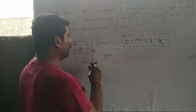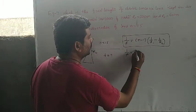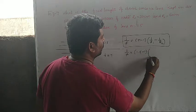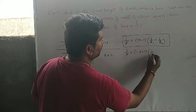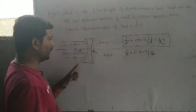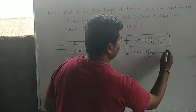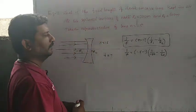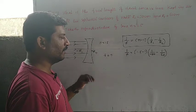Substitute all these values in that equation. 1 by f equals 1.5 minus 1 times 1 by R1 value. We have 30 centimeters - take negative sign for the concave surface - minus 1 by R2. R2 equals 60 centimeters. It should be taken as positive for the convex surface.